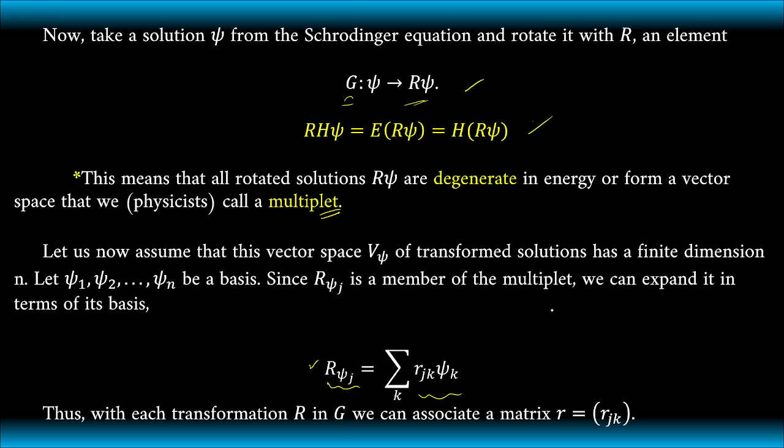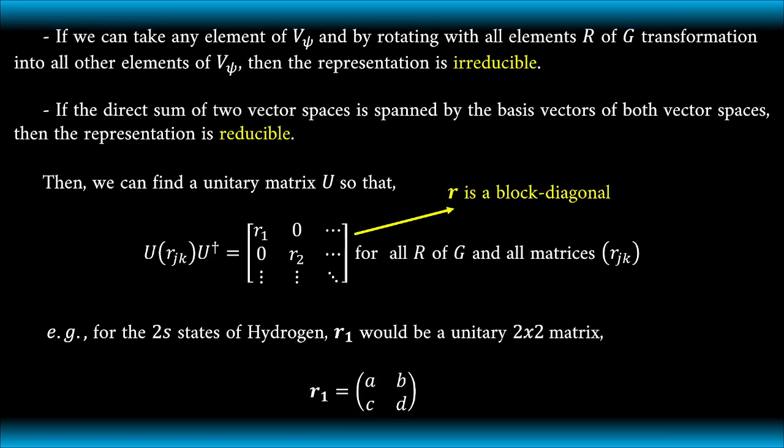Thus, with each transformation R in G, we can associate a matrix r = (rⱼₖ). We also can take any element of V𝜓 and by rotating with all elements R of G transformation into all other elements of V𝜓. Then the representation is called an irreducible representation. If the direct sum of two vector spaces is spanned by the basis vectors of both vector spaces, then we call the representation as reducible representation.